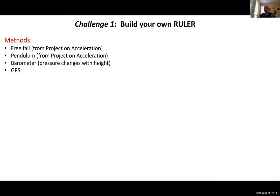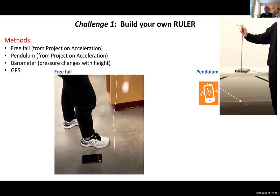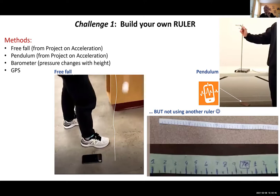For measuring distance without a ruler, students used free fall and pendulums, and could draw on their experience from Challenge 1 — most teams used this nicely. One team got a bit sneaky and decided that since they couldn't use a ruler, they would make their own by copying a known ruler onto a piece of paper. We caught it and didn't allow that.